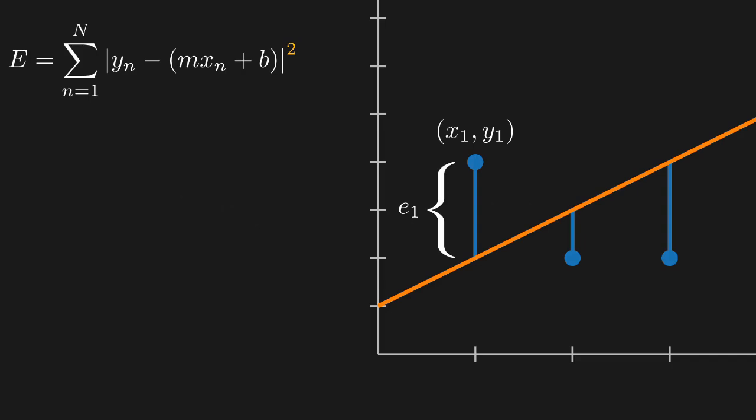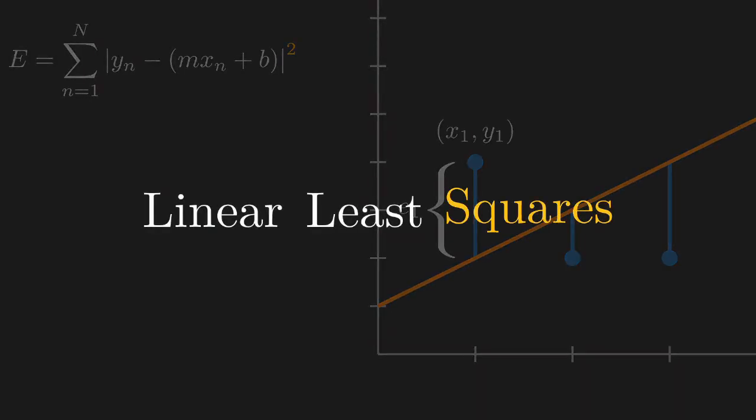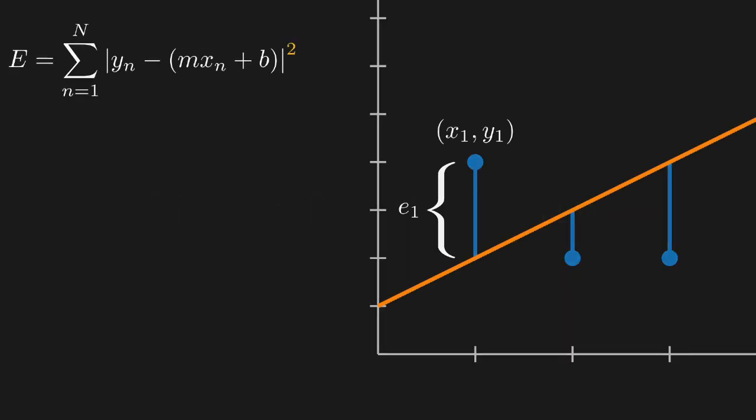Therefore, if we minimize the square of the error, then we have also minimized the error itself. So this is what we mean by linear least squares, because we're actually minimizing the sum of the squared error terms.